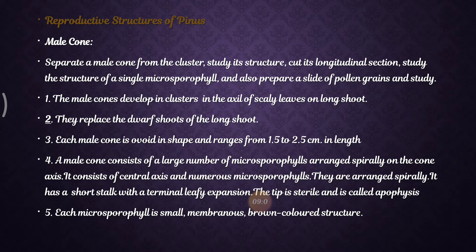Coming to the male cone: it is studied by separating it from the cluster and taking a longitudinal section. The male cone develops in a cluster in the axil of scaly leaves on the long shoot, replacing the dwarf shoot. Each male cone is ovoid in shape.